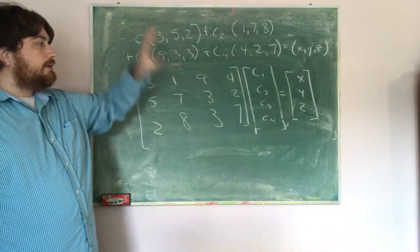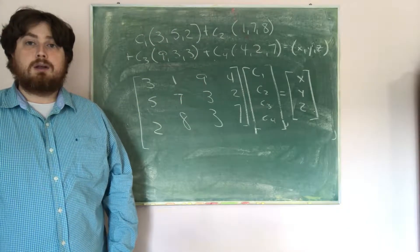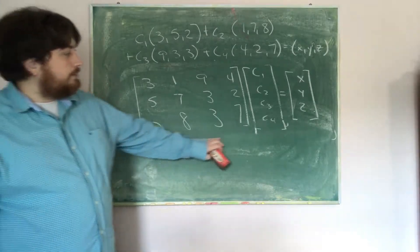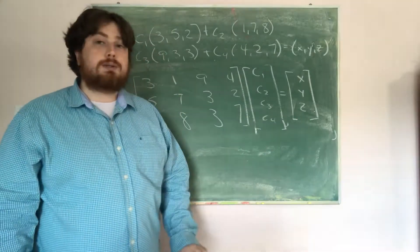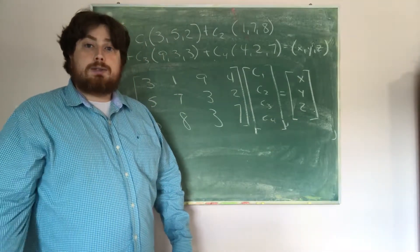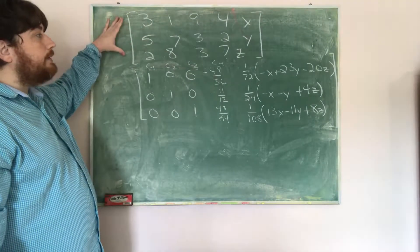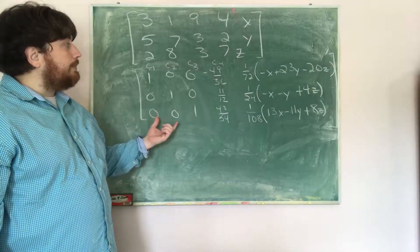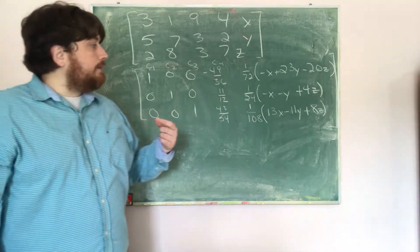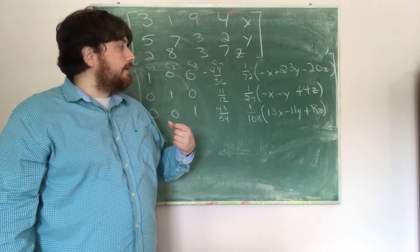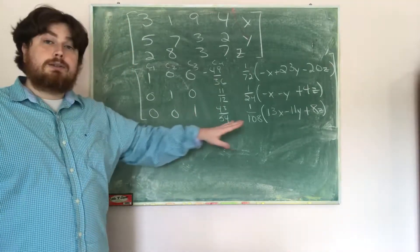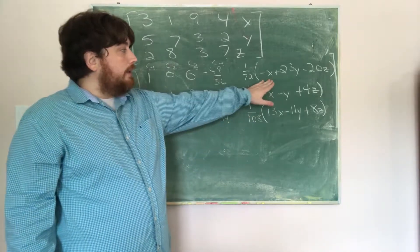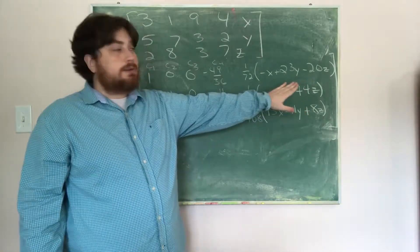Solving this equation is the same as solving the matrix equation. To solve it, we augment the matrix with the solution column (x, y, z) and row reduce to get a solution. You'll notice that I row reduced this matrix into the reduced form. On the right-hand side, x, y, and z are just constants, so we can call them D, E, and F.